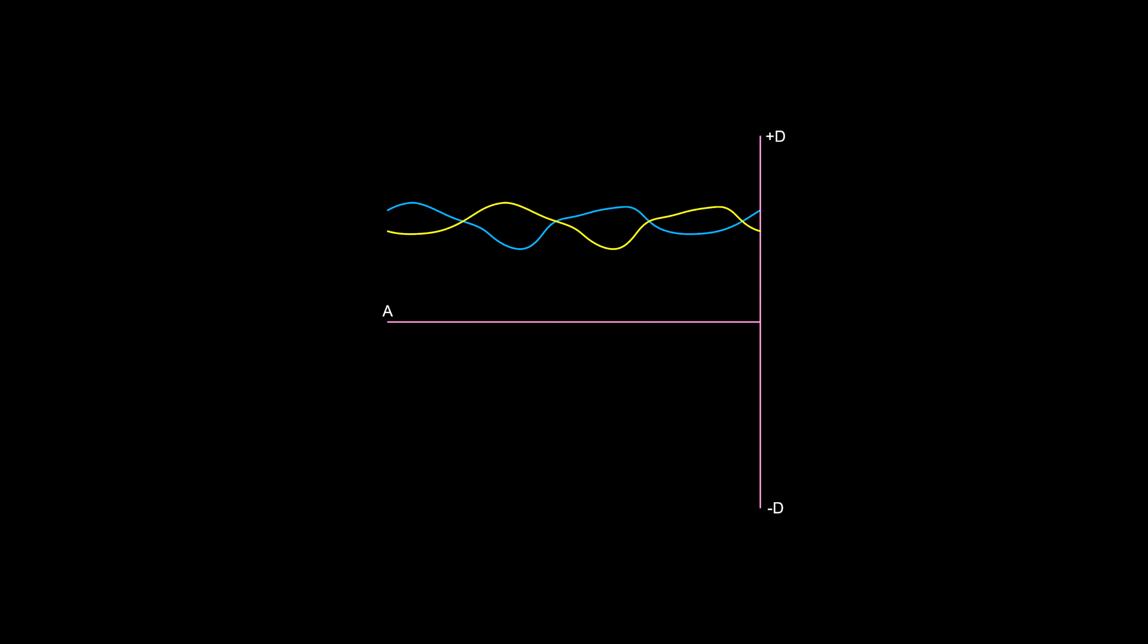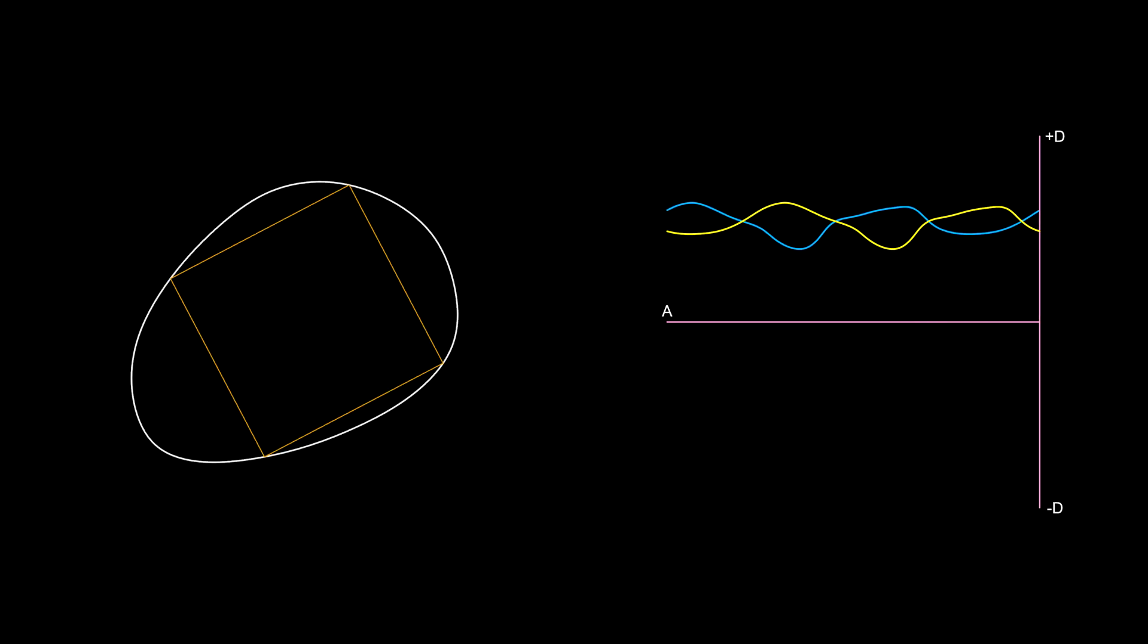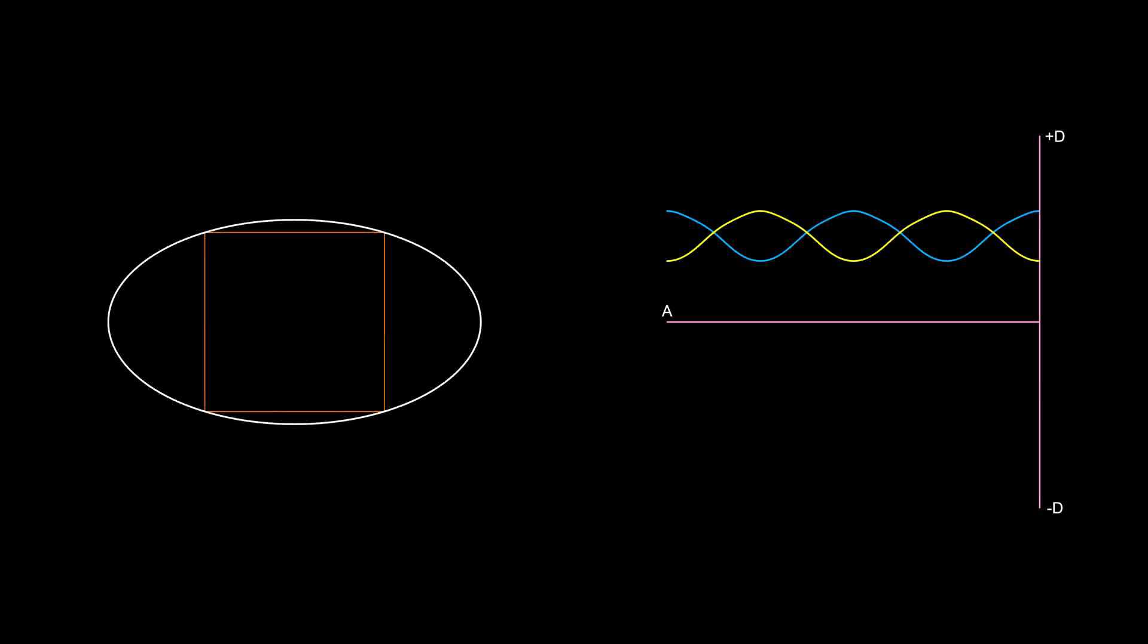But why is that happening? If you shift a periodic curve like we do, you will always produce at least two intersection points.